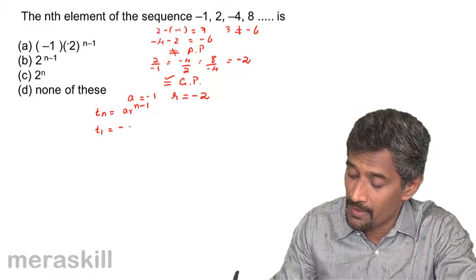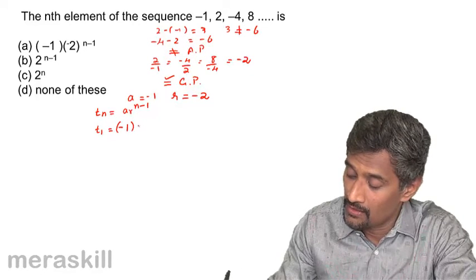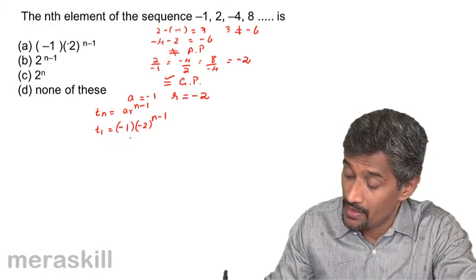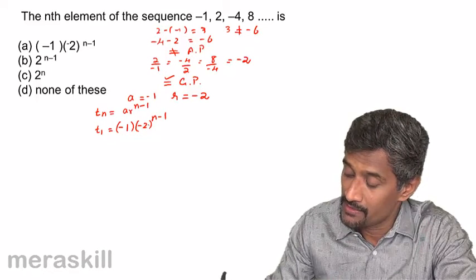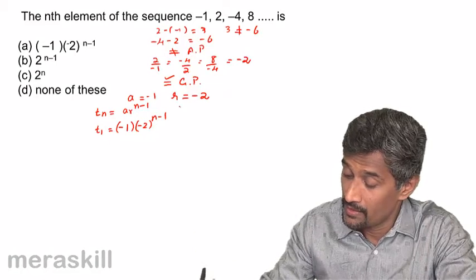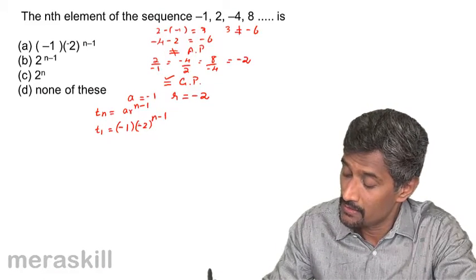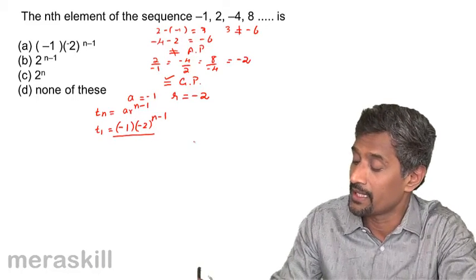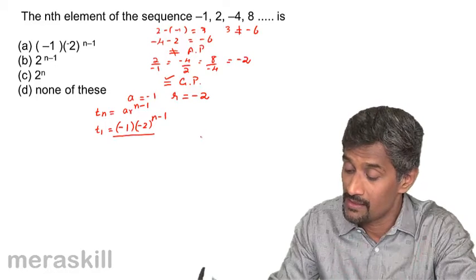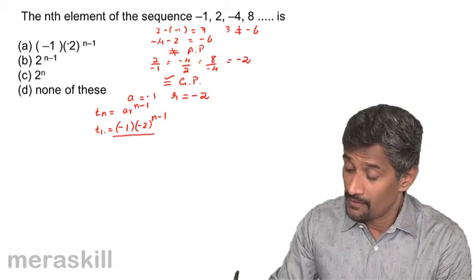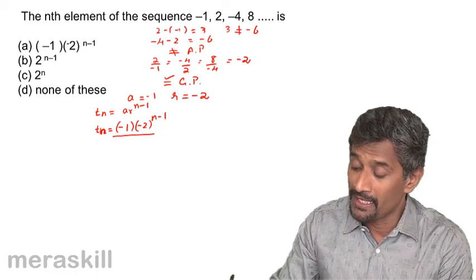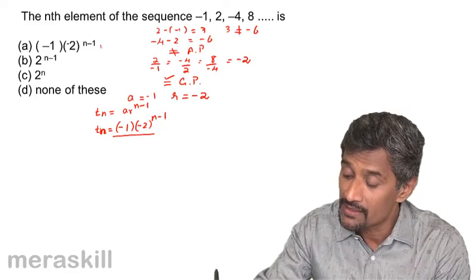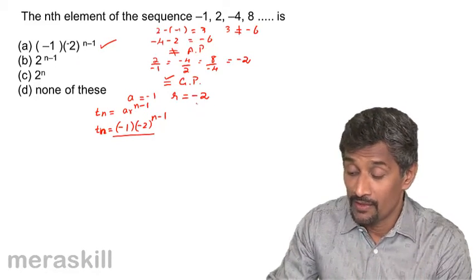So tn = (-1)·(-2)^(n-1), which equals (-2)^(n-1). This can also be written as (-1)^n · 2... essentially tn = (-1)·(-2)^(n-1). Among the given options, this is the right answer, and yes, we verify that is correct.